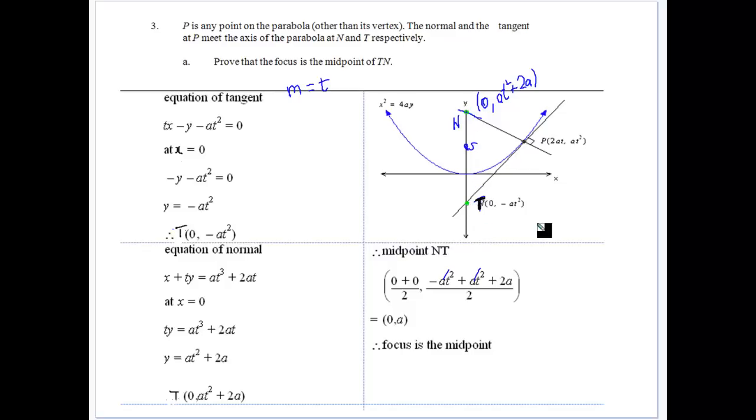All the axis of the parabola, which is going to be the y axis. Because it's x squared is equal to 4ay. So it doesn't actually say that, but we're assuming that that's what we're working with every time.